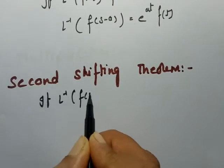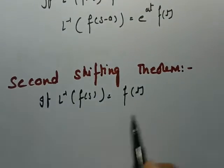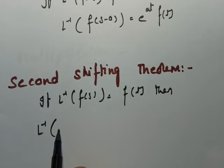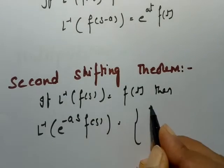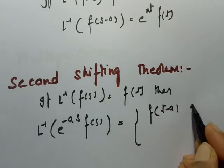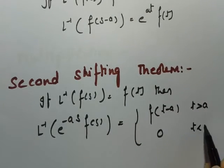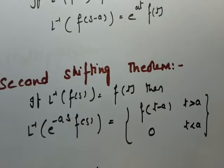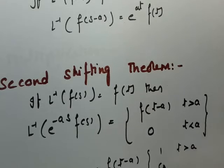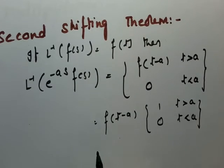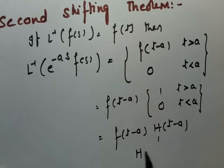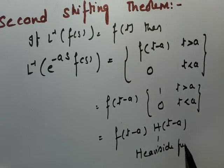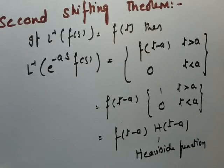Next is the second shifting theorem. If inverse Laplace transform of F(s) is equal to f(t), then inverse Laplace transform of e^(-as) times F(s) can be written as f(t minus a) for t greater than a, and 0 if t less than a. If you expand f(t minus a) it becomes 1 if t greater than a and 0 if t less than a — that is f(t minus a) times h(t minus a), where h(t minus a) is the Heaviside function.